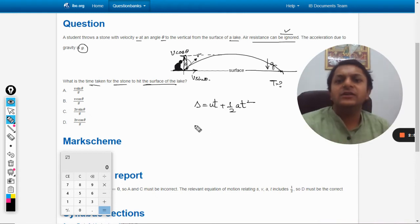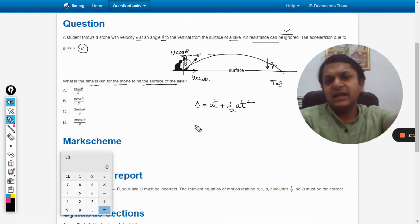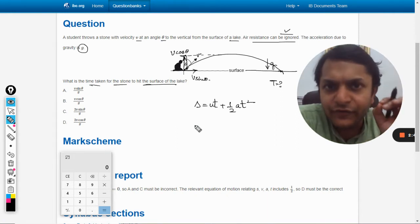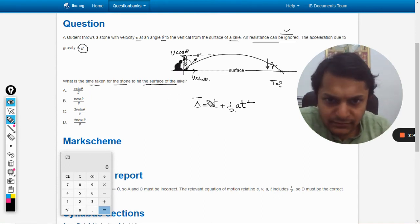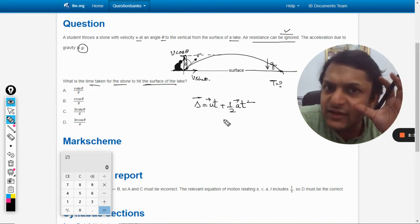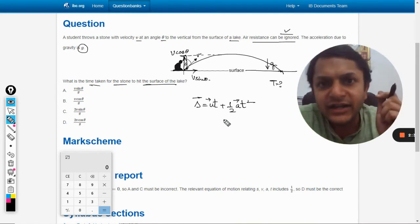Should we use this formula? Yeah, because displacement will be zero. Now this is our general equation of motion as given by Newton, and I tell you this is a vector equation. This is what students actually confuse—this is a vector equation.